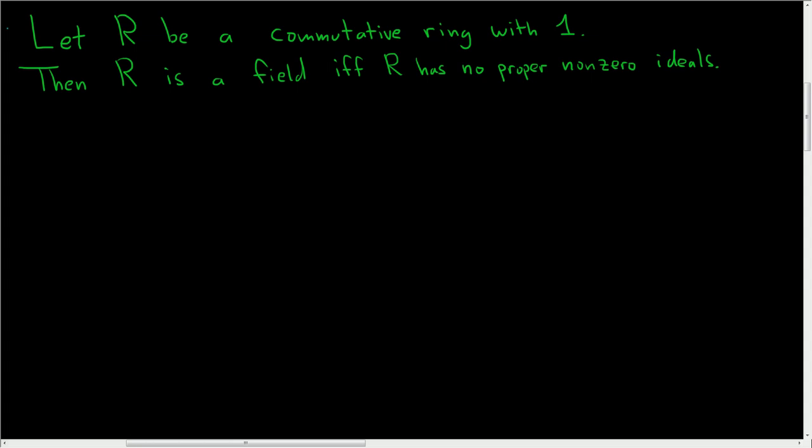Let R be a commutative ring with 1, and the claim is that R is a field if and only if R has no proper non-zero ideals. Let's go ahead and do this proof.